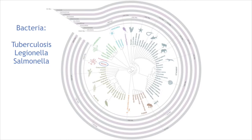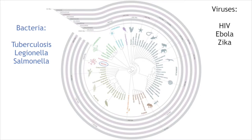Then you have archaeobacteria, and then you have this super kingdom called eukaryotes, which includes sea life, crustaceans, mammals, amphibians, birds, plants, and also fungi. You'll notice that viruses aren't on the tree of life — they cause diseases like HIV, Ebola, and Zika. The reason they're not on there is because technically they're not alive, and there is no one protein shared by all viruses to trace how they've evolved.